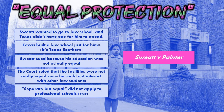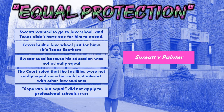Sweatt still sued. He argued that even though there are separate but equal facilities, he's not getting an equal education because he doesn't have any other law students to interact with — no mock trial activities, no debates with other students, no learning from other students. The Supreme Court sided with Sweatt and ruled that he was actually not getting an equal education. Here they start to chip away at the meaning of separate but equal. They said separate but equal does not apply to professional schools — meaning graduate schools like law schools and medical schools. So they're starting to get rid of separate but equal educational systems in the graduate school area.